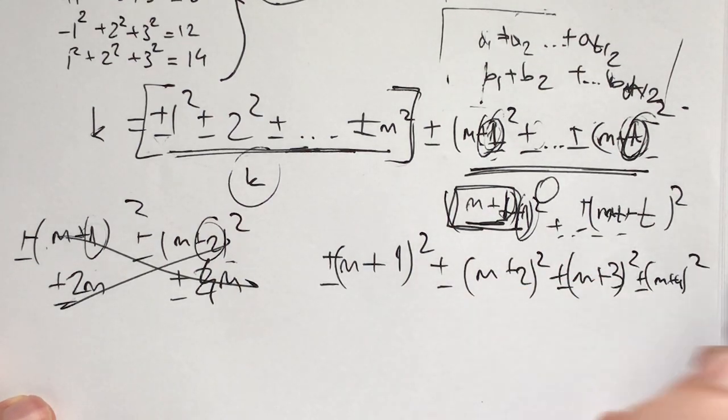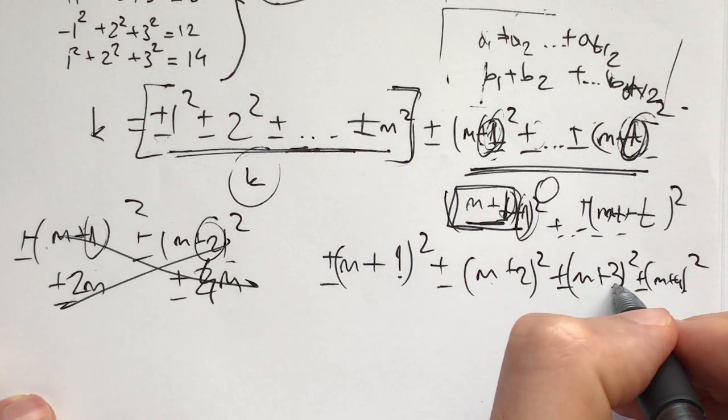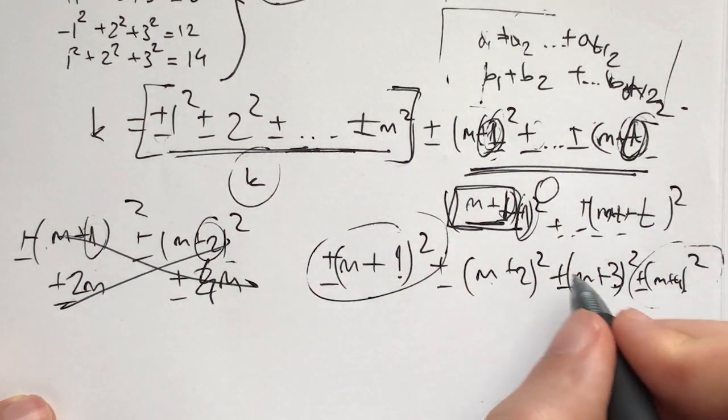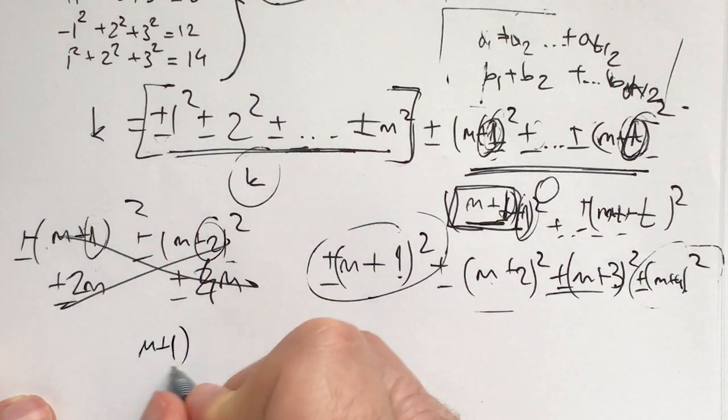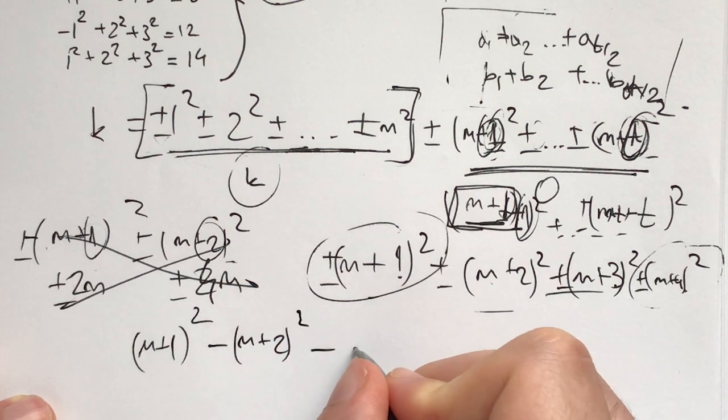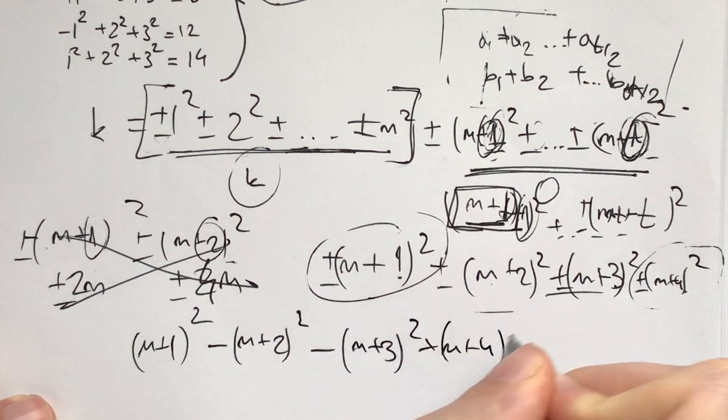Here's the thing. Two of them need to be positive, two of them need to be negative, and we need these to add up. So if we make this positive and this positive and these two negative, what do we have? We have (m+1)² - (m+2)² - (m+3)² + (m+4)².